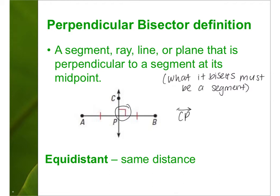CP is the perpendicular bisector of line segment AB. Equidistant means it's the same distance — A and B are both equidistant from P, the same distance away from point P. That's what makes them congruent.